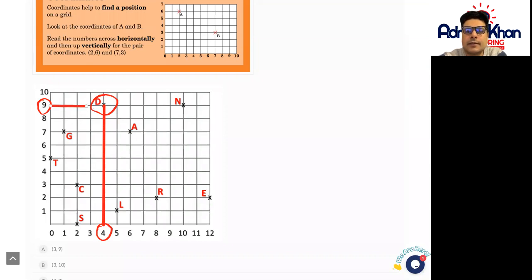Which will be just here. So in this case our coordinate for D will be 4 comma 9 and we usually write them in brackets.